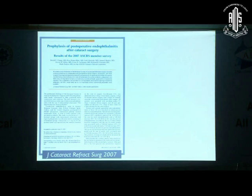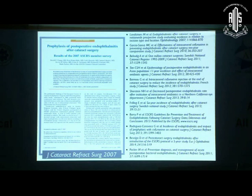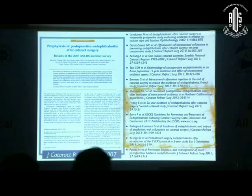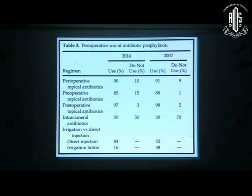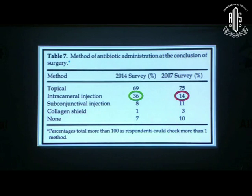I want to point out this particular study and survey by JSCRS, which compares the initial 2007 survey to what was done in 2015. What is shown here is that most of the prophylactic regimen has been more or less the same, but the difference is that intracameral injected antibiotics have gained in popularity and acceptance in the United States. The preferred delivery route is intracameral injection rather than diluting antibiotics in the irrigating solution.